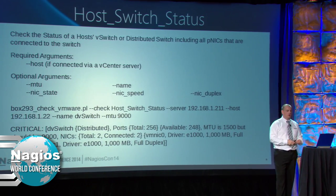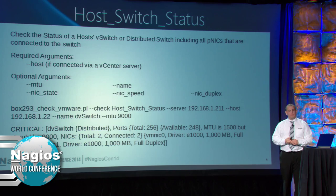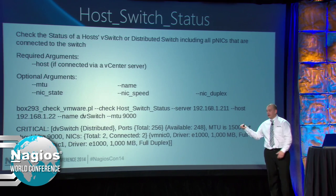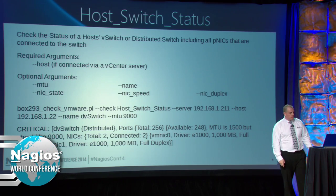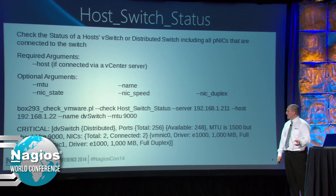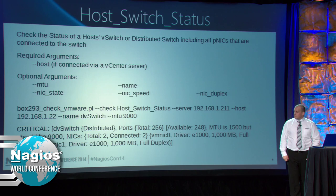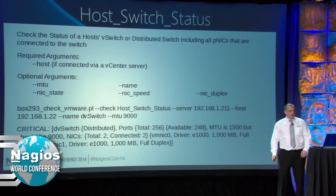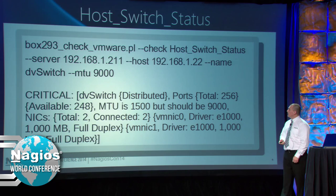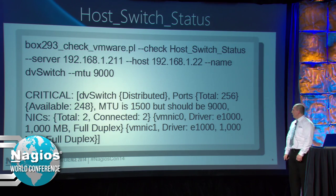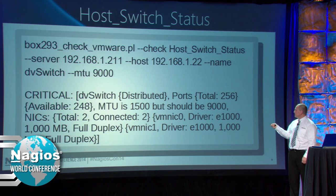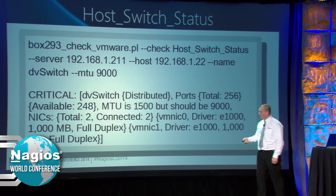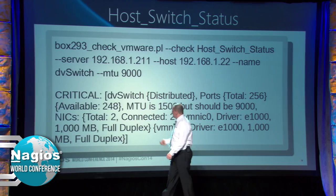Host switch status - when talking about iSCSI NICs, you want to make sure that the MTU size is correct. With this, you can actually check that the MTU size on the switch is correct - you need it to be 9000 when dealing with 10-gig ethernet and iSCSI NICs. It also checks the NICs inside the switch. In this particular example, it was reporting that the MTU is 1500 but should be 9000 and that's why it's gone to critical status.